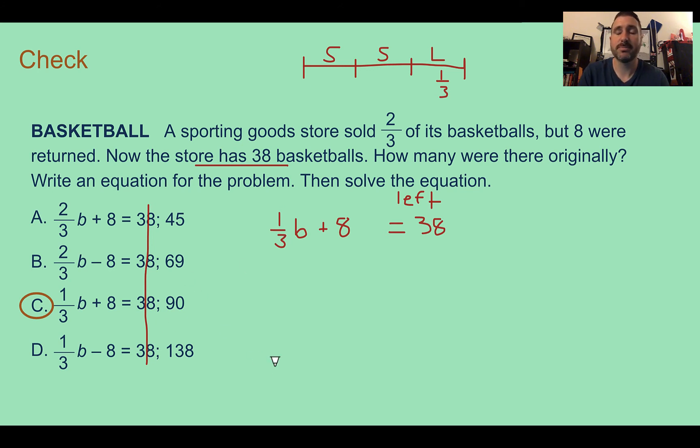So the store started with 90 basketballs. If we wanted to check to see if 90 makes sense, if they had 90 total, that means that each is 30. So there should have been 30 sold, another 30 sold, and the 30 left over. Two-thirds of them were sold, which brings it down to a 30 total. Have eight back, we have 38 left. So 90 does make sense. C is the correct answer.